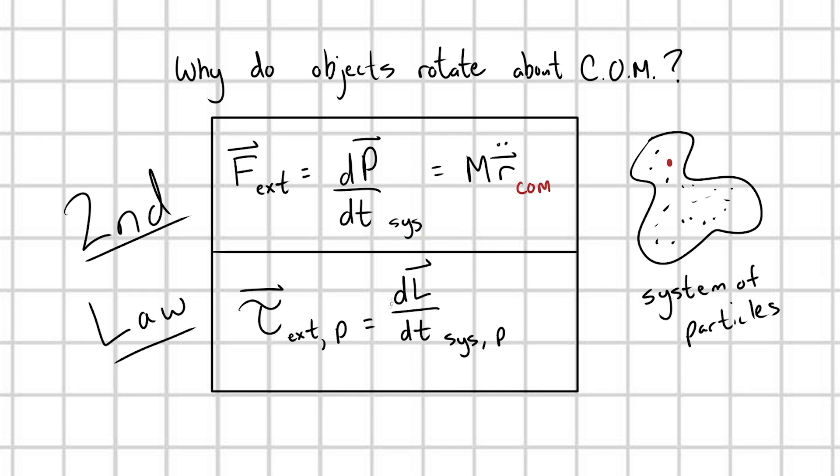We also have the rotational variant of Newton's second law: the net external torque about some point P—you have to define some point P that you're taking the torque about—is going to cause a rate of change of angular momentum for my system of particles about that point P. This is our bread and butter. These are the fundamental ideas of dynamics. We want to be very clear and precise with our notation before analyzing whatever situation we're interested in.